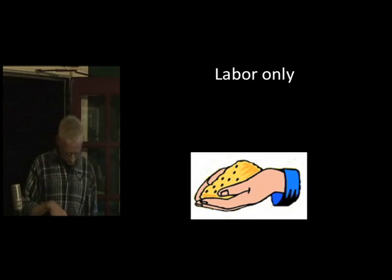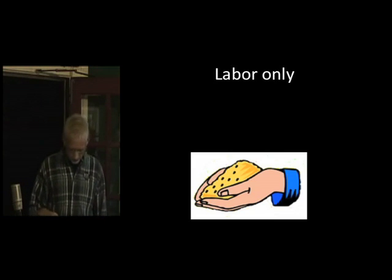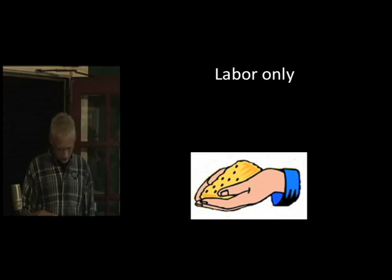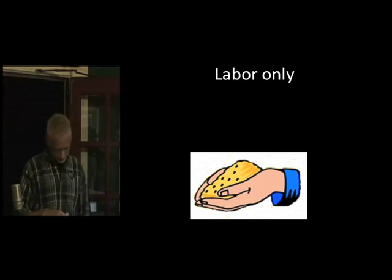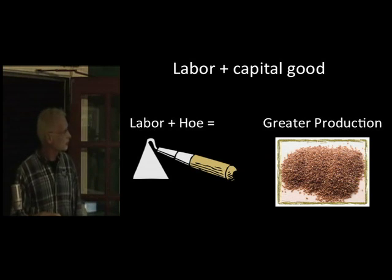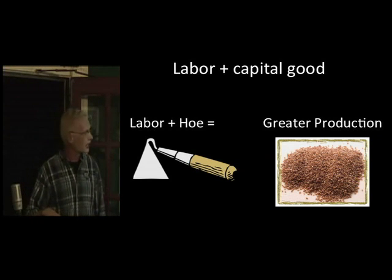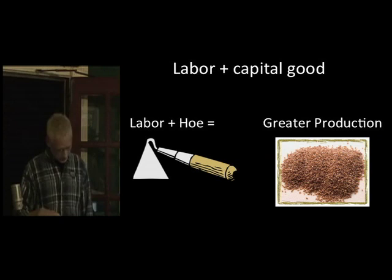Capital goods take one man's labor and make it increasingly more productive. Consider one man's production of wheat — he puts it into the ground by hand and harvests by hand. Labor only, without the assistance of capital goods. Not much production here. Then put one man with a capital good of a hoe. Instead of tilling the ground with his hand, he tills with the hoe. He gets a little greater production.